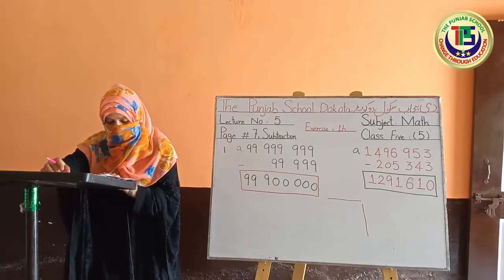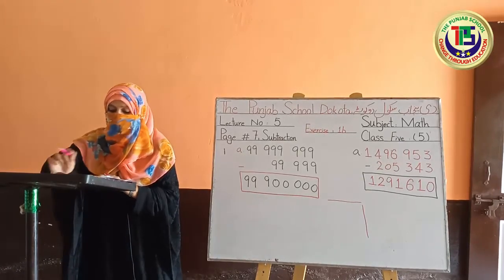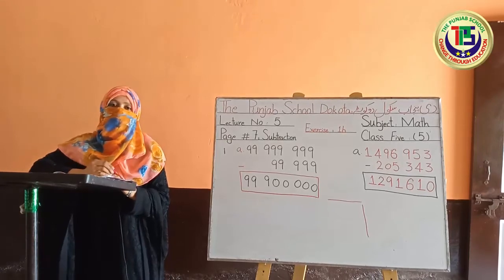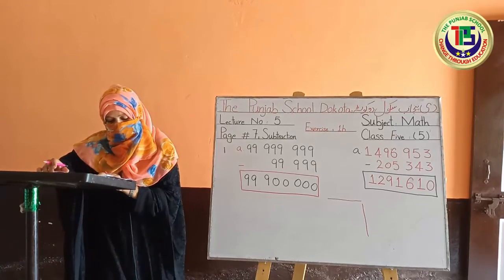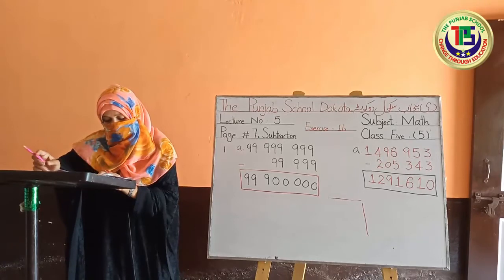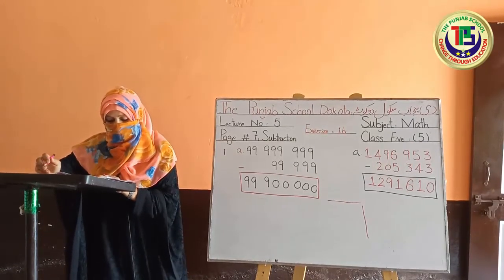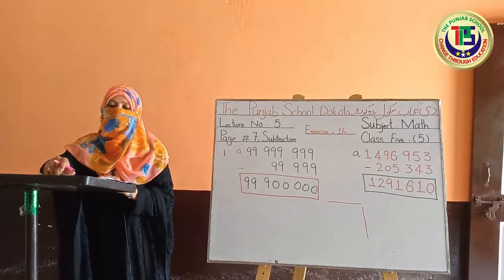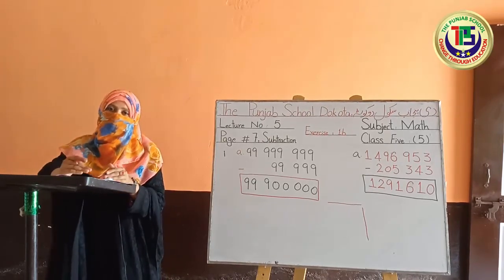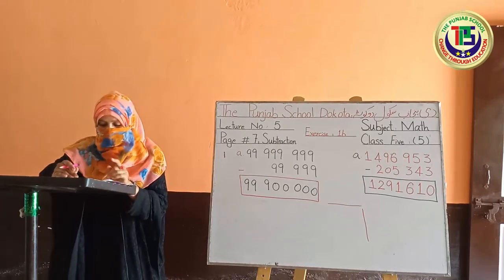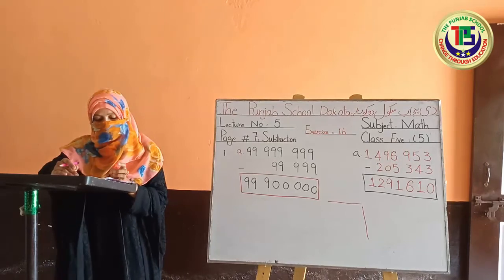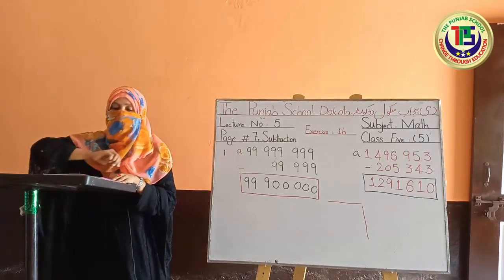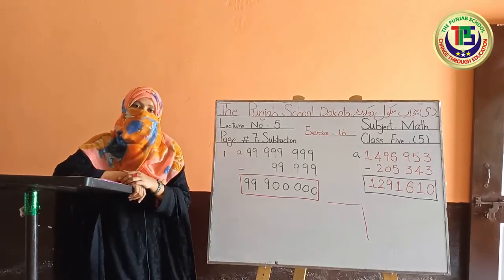The next part of the same question: 'What is the difference in population between this city and Faisalabad?' — meaning between Quetta (which we just found) and Faisalabad. We have to find the difference, so take both amounts and subtract to get the answer. Then the last part: 'If the population of Peshawar is added to that of Quetta, how many people are there altogether?' This is an addition question — we are asked to combine them. Take Peshawar's population and Quetta's population and add them together.